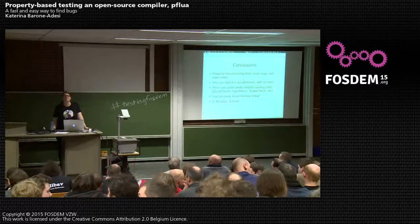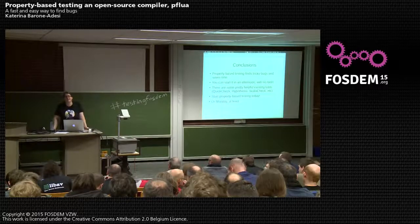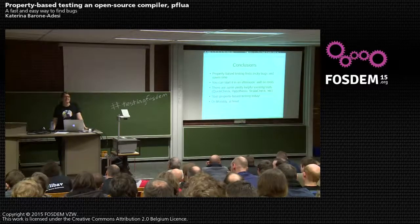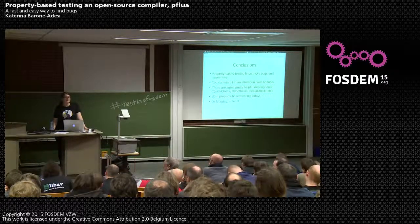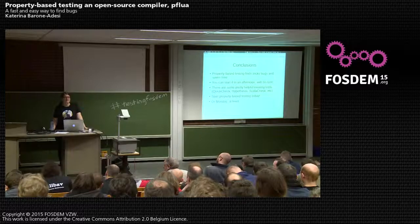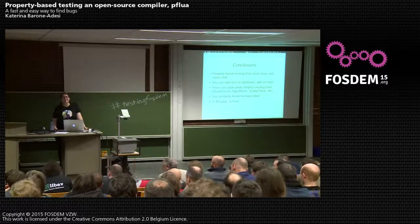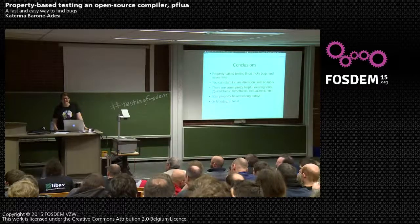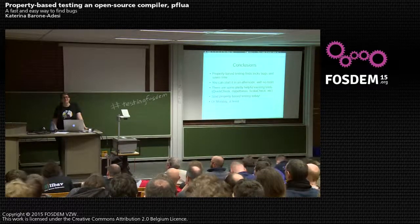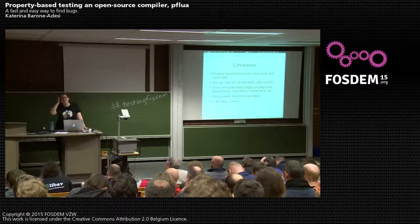Q: Do you know any good property-based testing tool in Ruby? A: I believe there is a port of QuickCheck to Ruby. I've been told by someone here that there is — it's apparently called Rantly. I've seen some really good QuickCheck ports and some really bad ones. If you have trouble finding one, email me and I'll see if I can hunt one up.